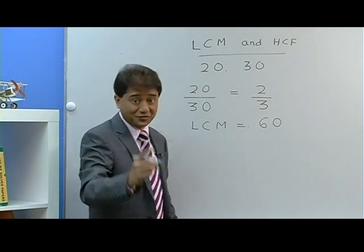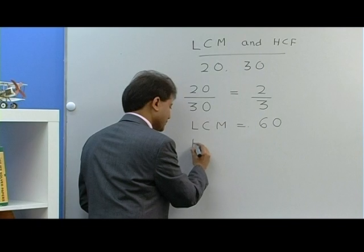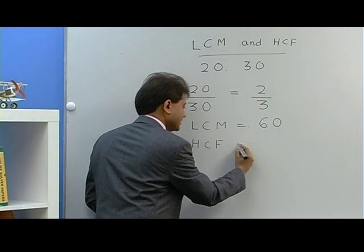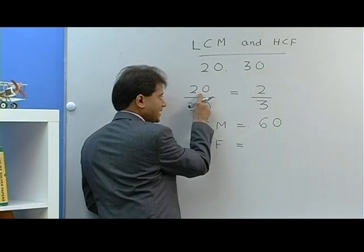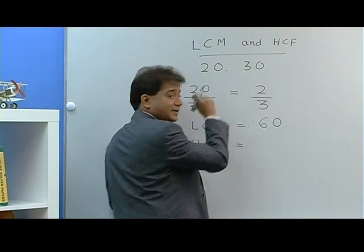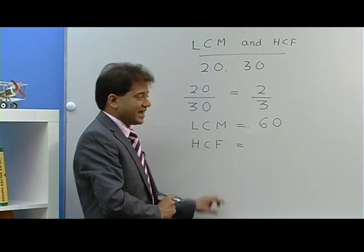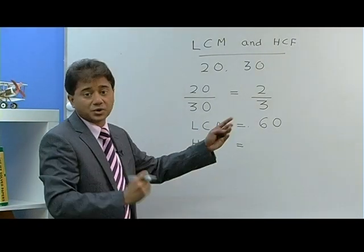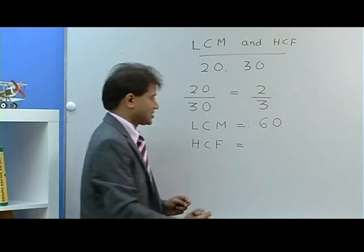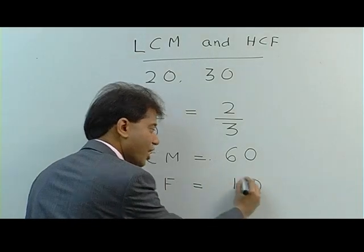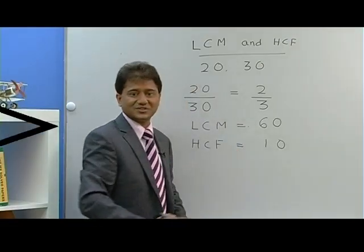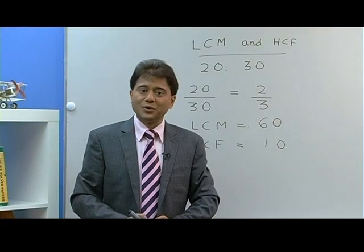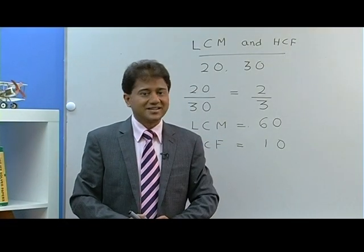And if you want HCF, what do you do? You just divide. 20 divided by 2 is 10, and 30 divided by 3 is also 10. So 10 is your answer. Now I'm going to give you a test.